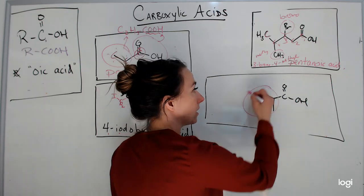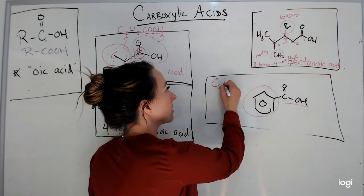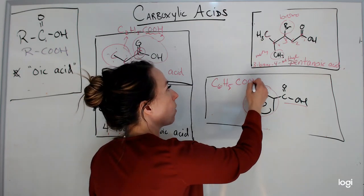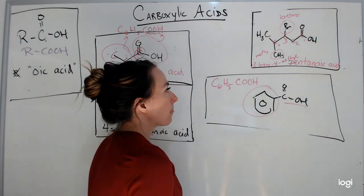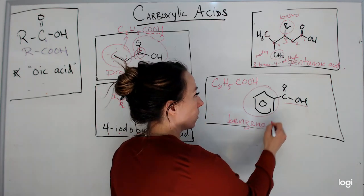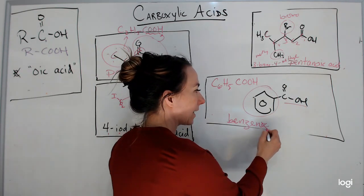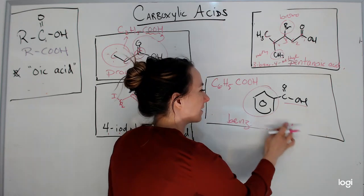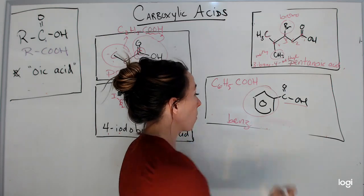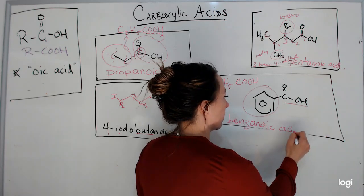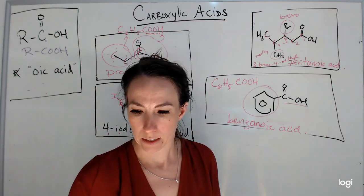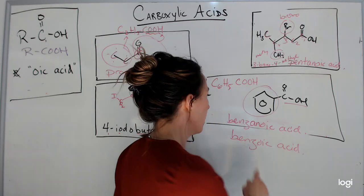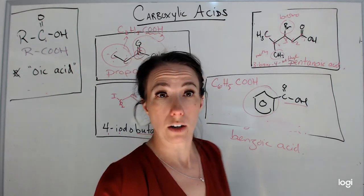Here I have a benzene ring with a carboxylic acid attached. The molecular formula would be C6H5COOH — benzene has six carbons and five hydrogens once one hydrogen is removed to attach the carboxylic acid substituent. For this one it's a bit unusual: I don't just drop -e and add -oic acid like normal. Instead, benzene with the carboxylic acid attached is called benzoic acid — that's its common name.